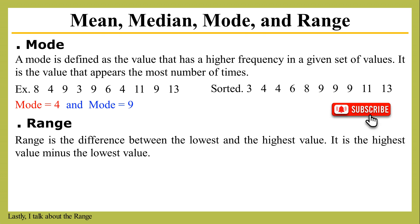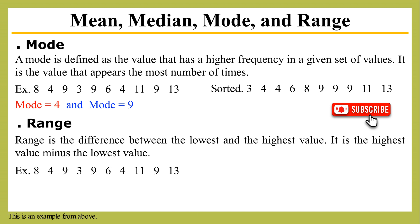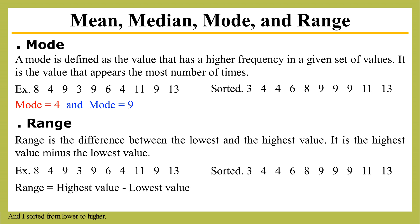Lastly, I talk about range. Range is the difference between the lowest and the highest values — it is the highest value minus the lowest value. This is an example from above, sorted from lower to higher. Therefore, the range equals 10.